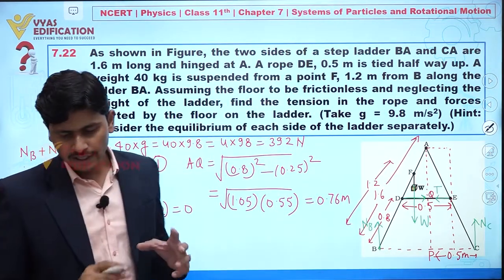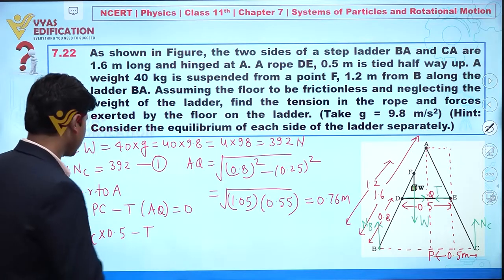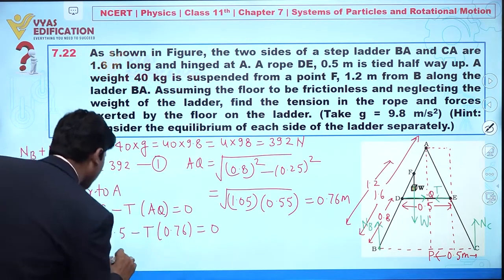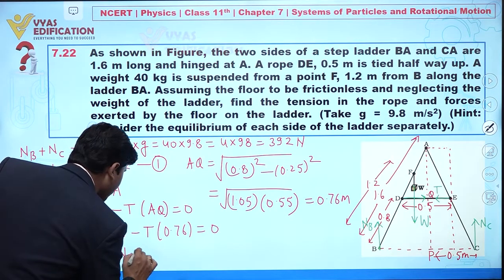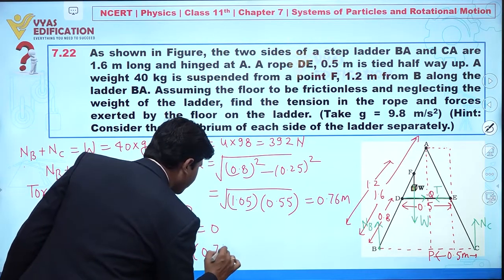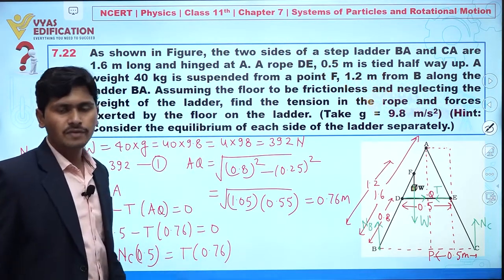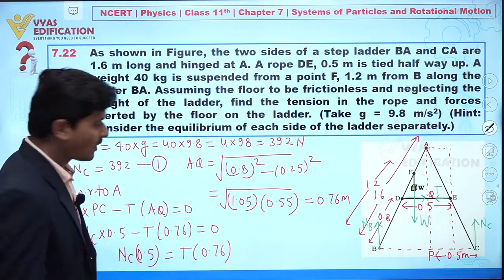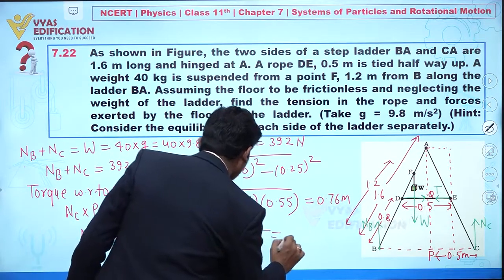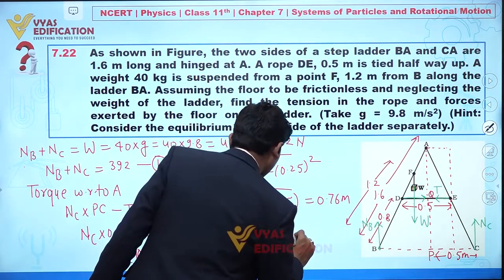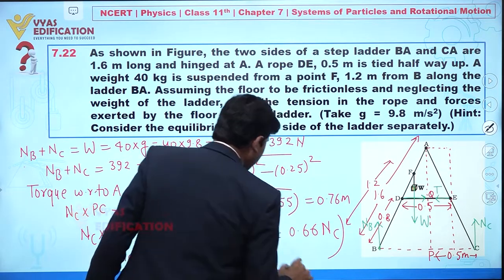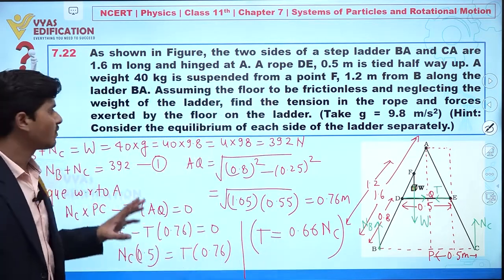So we have NC times 0.5 equals T times 0.76, which gives us tension T equals 0.66 times NC. This is an important equation — equation number two.